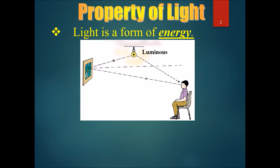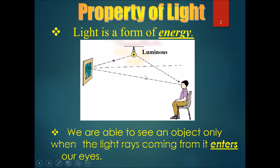The first property is that light is a form of energy. We are able to see an object only when the light rays coming from it enter our eyes. You can see here that light comes from the light bulb and you can draw an arrow showing it reaches your eyes.